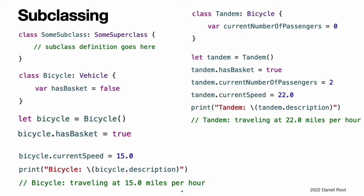Subclassing. Subclassing is the act of basing a new class on an existing class. The subclass inherits characteristics from the existing class, which you then refine. You can also add new characteristics to the subclass. To indicate that a subclass has a superclass, write the subclass name before the superclass name, separated by a colon. This example defines a subclass called Bicycle with a superclass of Vehicle. The new Bicycle class automatically gains all the characteristics of Vehicle, such as its currentSpeed and description properties and its makeNoise method. In addition to the characteristics it inherits, the Bicycle class defines a new stored property hasBasket with the default value of false, inferring a type of Bool for the property.